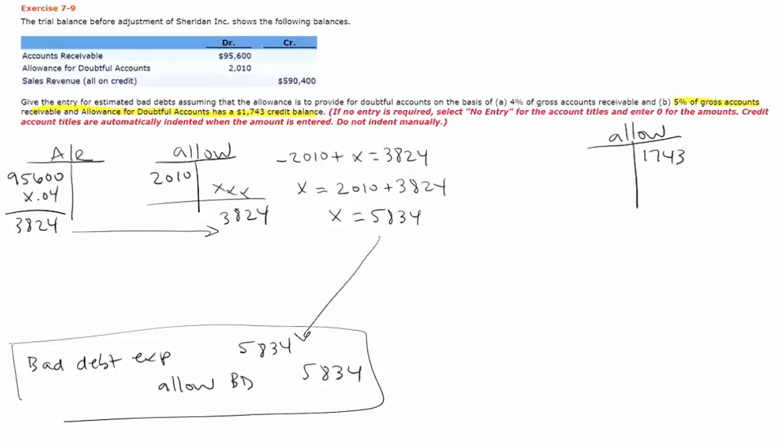So I'm still going to take a percentage of sales, so my sales is $95,600, and I'm going to times it by 5% as given in the data set, and that gives me $4,780, and that will now be the ending balance.